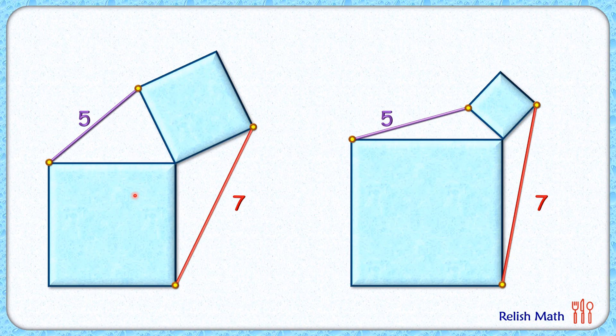How about if we rotate this blue square on top more anticlockwise, such that both the squares are sharing the same side length?